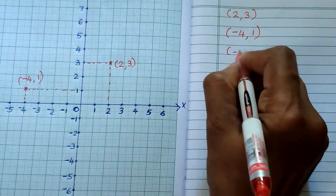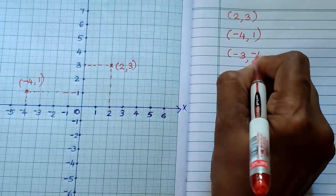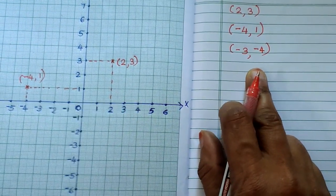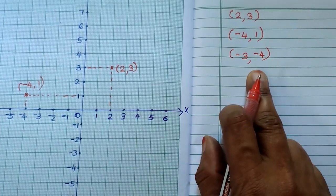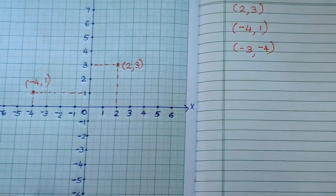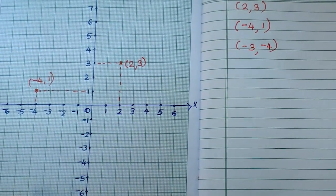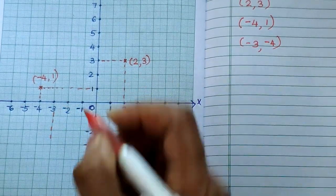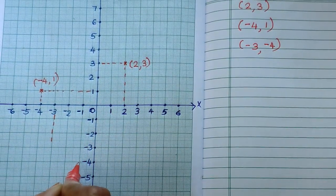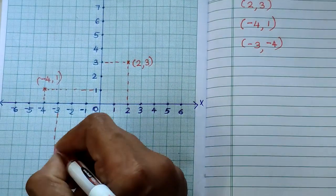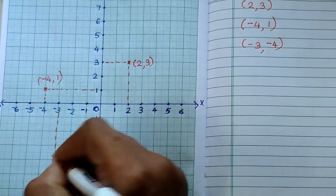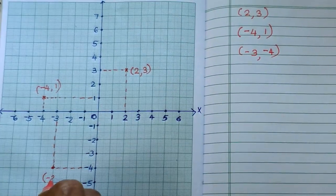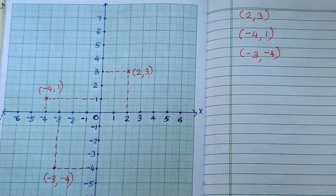Next, (-3, -4). Here both coordinates are negative, so it lies in the third quadrant. On the x-axis take -3, and on the y-axis take -4. The meeting point is (-3, -4).